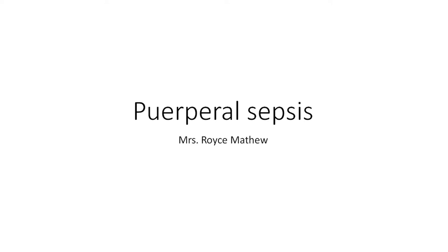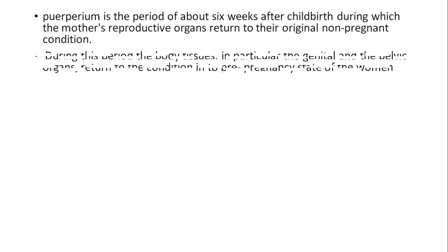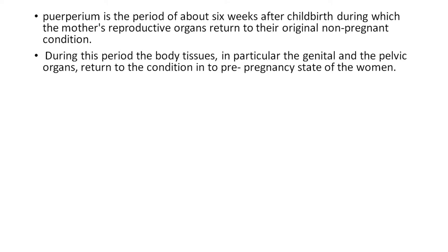Good morning students. In this class we will see about puerperal sepsis. The puerperium is the period of about six weeks after childbirth during which the mother's reproductive organs return to the original non-pregnant condition. During this period, the body tissues, especially the genital and pelvic organs, return to the condition of the pre-pregnant state of the woman.